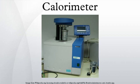A small correction is made to account for the electrical energy input, the burning fuse, and acid production. After the temperature rise has been measured, the excess pressure in the bomb is released. Basically, a bomb calorimeter consists of a small cup to contain the sample, oxygen, a stainless steel bomb, water, a stirrer, a thermometer, the dewar or insulating container, and ignition circuit connected to the bomb.